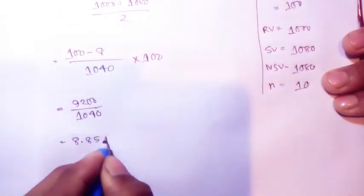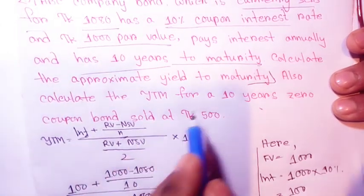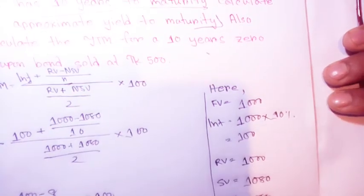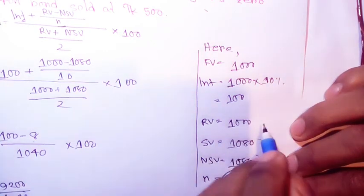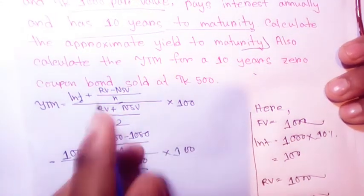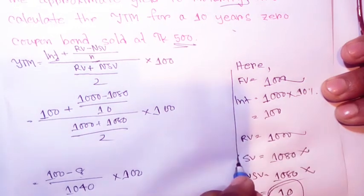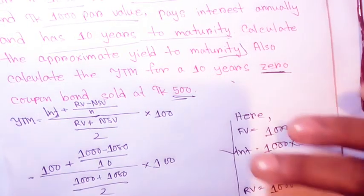Now for the YTM for a 10 years zero coupon bond - the selling price changes, the redemption value doesn't change, face value doesn't change. The selling price changes because it's sold at 500. The interest rate for this zero coupon bond is zero, so the interest changes.